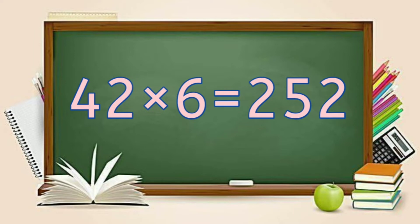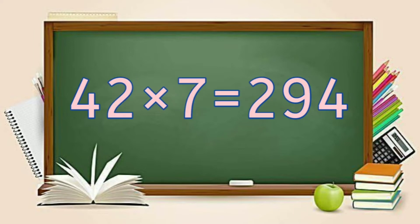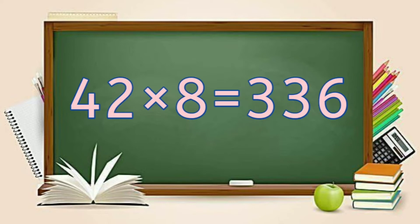42, 6's are 252. 42, 7's are 294. 42, 8's are 336.